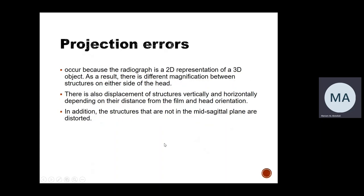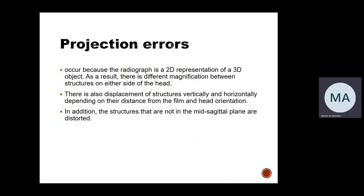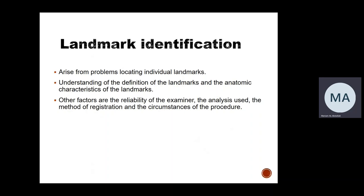Projection errors are related to the fact that this is a two-dimensional radiograph representing three-dimensional structures of the head and neck. As a result, there are different magnifications between structures on either side of the head — for example, the right and left condyles are superimposed, with one closer to the film and the other closer to the X-ray source, causing magnification issues. There is also displacement of structures vertically and horizontally depending on their distance from the film and head orientation.